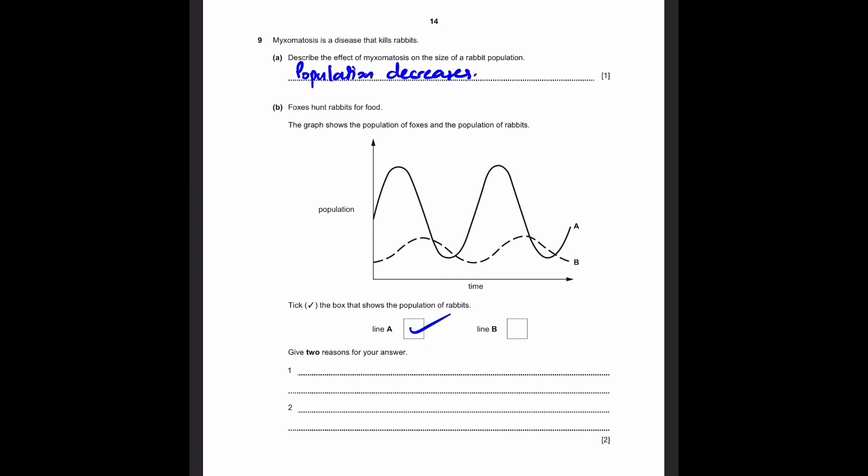The first reason is that a rabbit's population is going to be higher than foxes on average. Of course there are a few periods where it's lower, but on average the rabbits are usually higher. As you can see there's a huge period here, another one here and one over here. Compared to the time when it's smaller population, this is much larger. So rabbits usually have higher population than foxes.